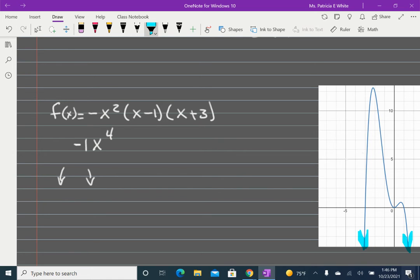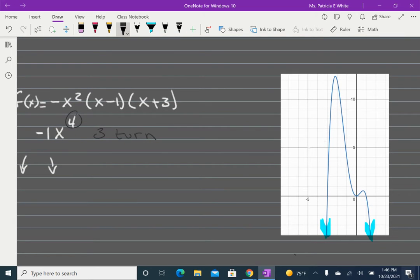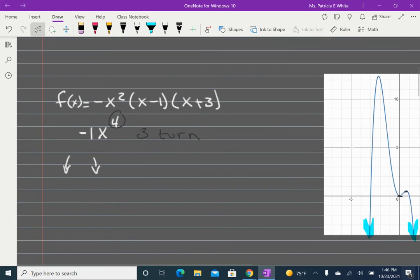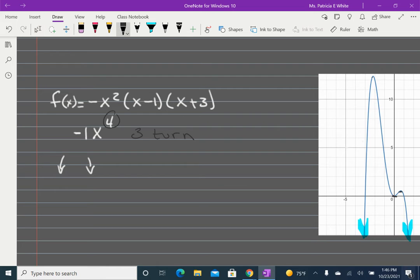And I can look and see that that's right. I also have a degree of 4, and the degree minus 1 gives me my number of turns. So I should be looking at 3 different turns. I have 1 here, here, and here. So that's confirmed.